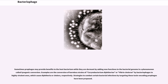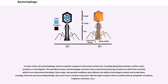Examples include the conversion of harmless strains of Corynebacterium diphtheriae or Vibrio cholerae by bacteriophages to highly virulent ones, which cause diphtheria or cholera, respectively. Strategies to combat certain bacterial infections by targeting these toxin-encoding prophages have been proposed. To enter a host cell, bacteriophages attach to specific receptors on the surface of bacteria, including lipopolysaccharides, teichoic acids, proteins, or even flagella.